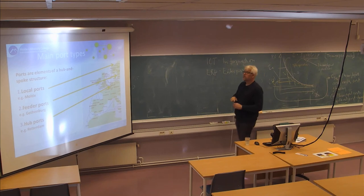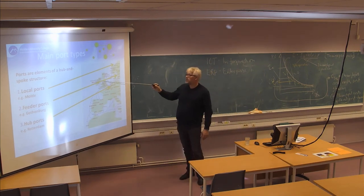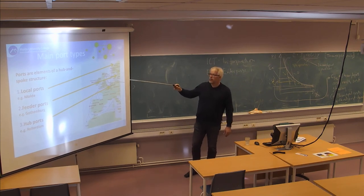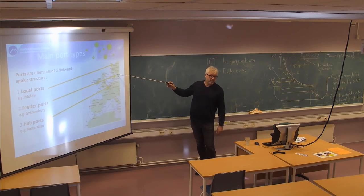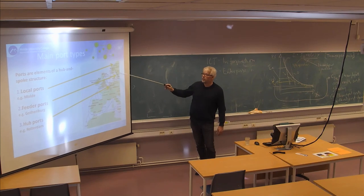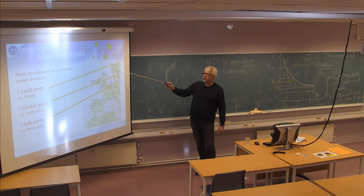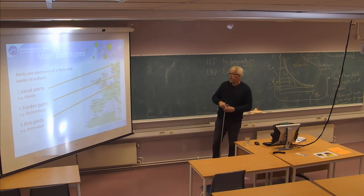The feeder ports, which are medium-sized, like Gothenburg. Gothenburg is actually the biggest port in Norway, even if it's located in Sweden, because they take the cargo in and take it by road or rail to Oslo. Split it there at the Oslo main terminal, and then on to the final destinations. And then you have the hub ports.